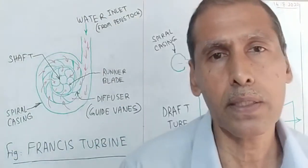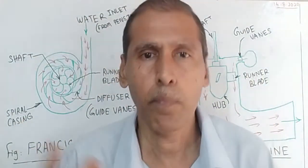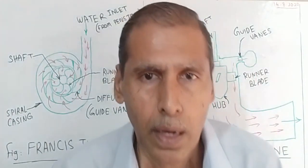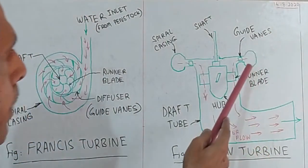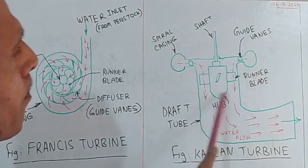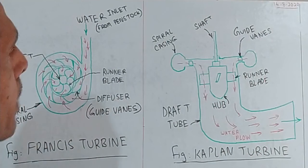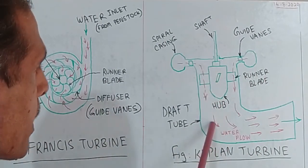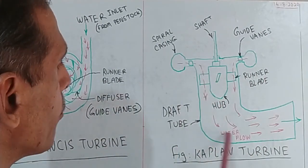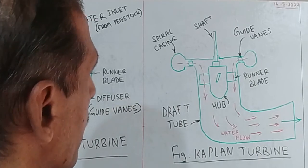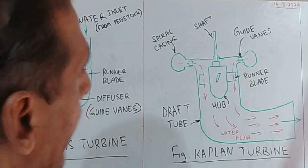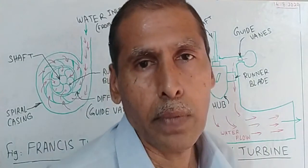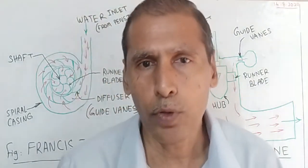When running through the penstock, all the energy is converted in the blade — it is complete pressure energy converted to kinetic energy, then to mechanical energy. There is also a draft tube. The Kaplan turbine is an axial flow turbine, while the Francis turbine is a radial flow turbine.